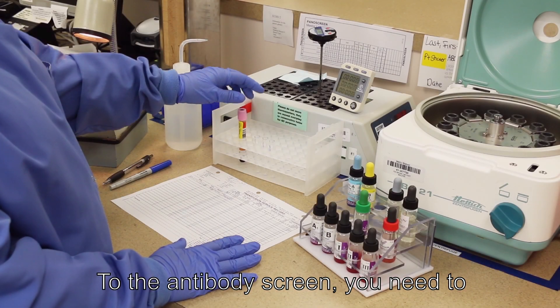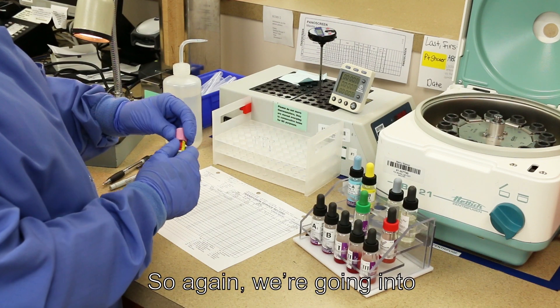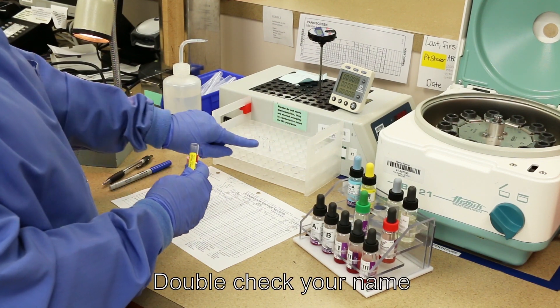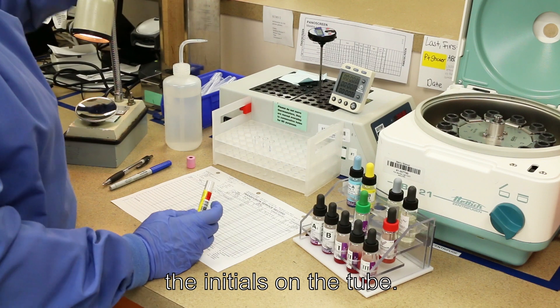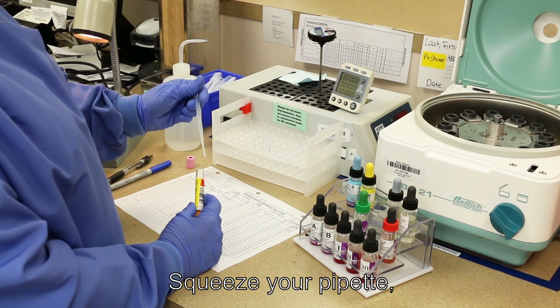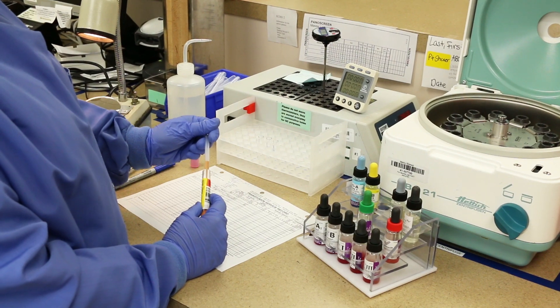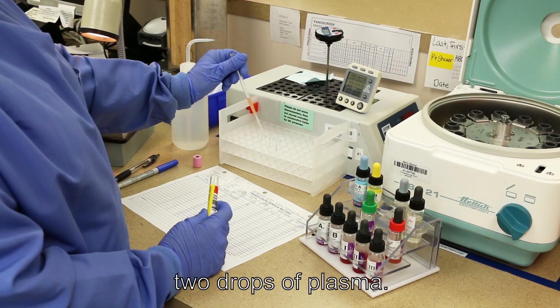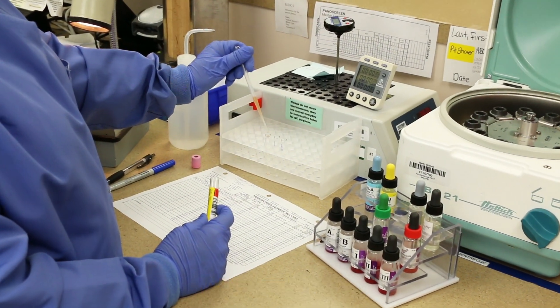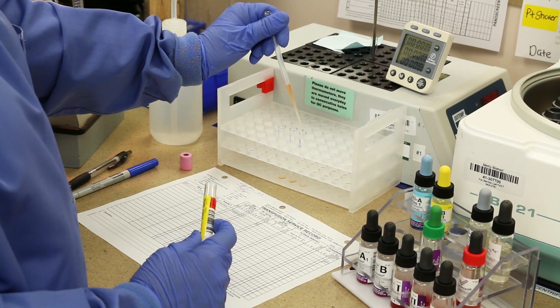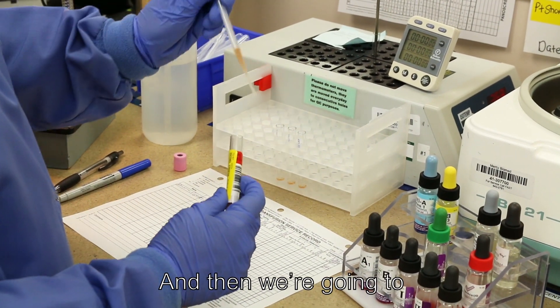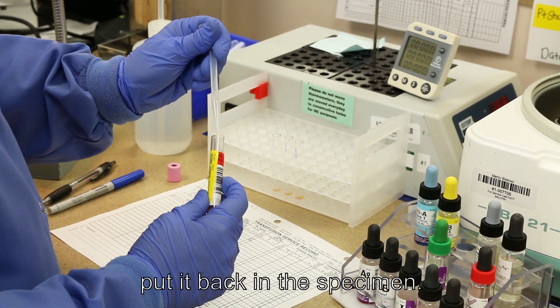To the antibody screen, you need to add the patient plasma. So again, we're going to go into our patient specimen, double check your name, make sure it matches the initials on the tube, squeeze your pipette, go down and get plasma. And again, we're going to add two drops of plasma. We're adding our lightest reagent first. And then we're going to save this plasma, put it back on the specimen.